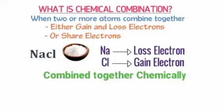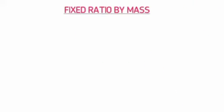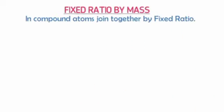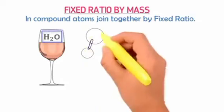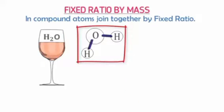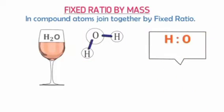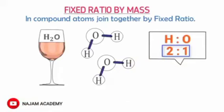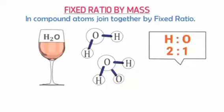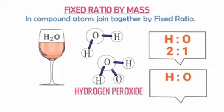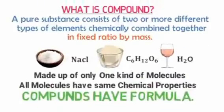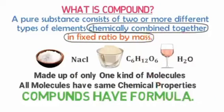They are combined together chemically to form a compound. What is fixed ratio by mass? In a compound, atoms are joined together in a fixed ratio. Look at water H2O — we have two hydrogen molecules and one oxygen molecule, giving a ratio of 2:1 to form H2O. If we add one more hydrogen molecule, we form a different compound: hydrogen peroxide. So a compound is a pure substance consisting of two or more different types of elements chemically combined together in a fixed ratio by mass.